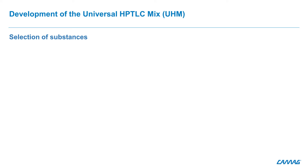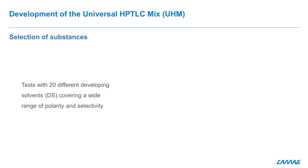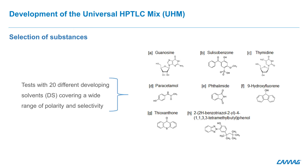The second step of the investigation was the chromatographic behavior of these 24 substances on HPTLC plates with 20 different developing solvents covering a wide range of polarity and selectivity. At the end, eight substances were selected: guanosine, silylbenzophenone, thymidine, paracetamol, phthalimide, hydroxyflavone, thioxanthone, and benzotriazole tetramethylbutylphenol.